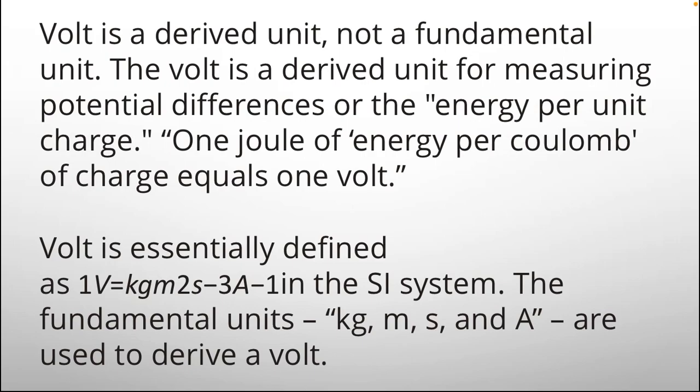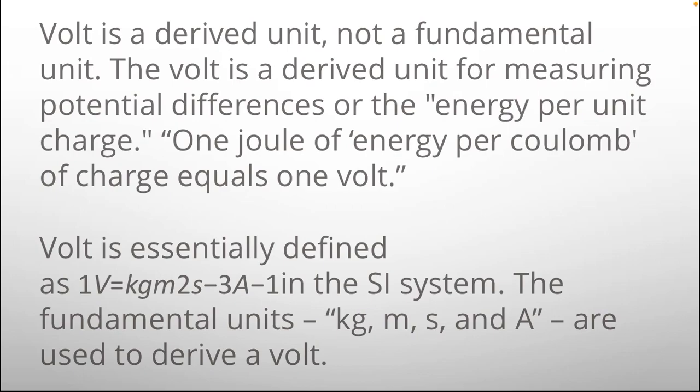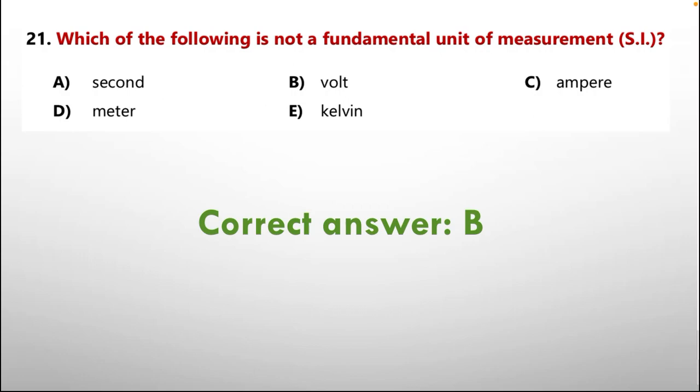However, volt is a derived unit, not a fundamental unit. The volt is a derived unit for measuring potential differences or the energy per unit charge. 1 joule of energy per coulomb of charge equals 1 volt. Volt is essentially defined as 1 volt equals kg·m²·s⁻³·A⁻¹ in the SI system. From the fundamental units kg, meter, second, and ampere are used to derive a volt. So the answer for this question is option number B, volt.